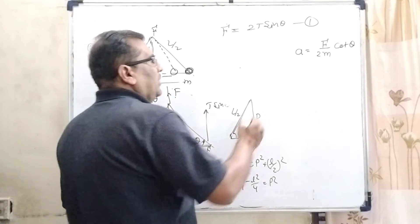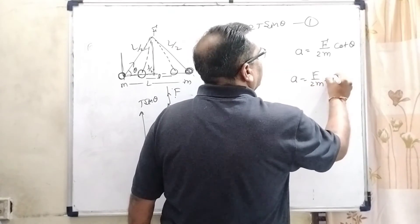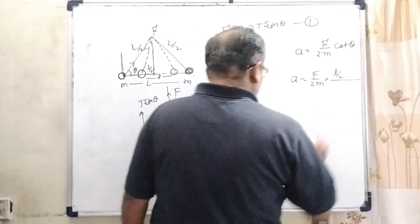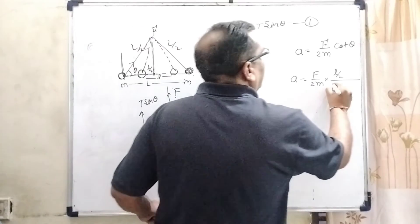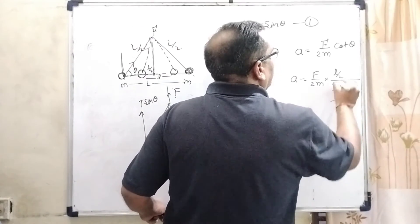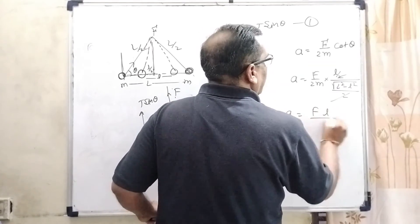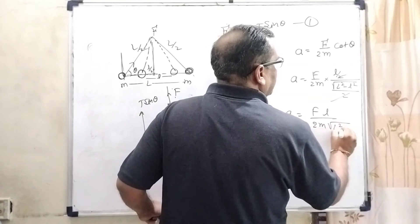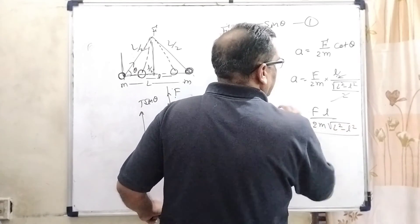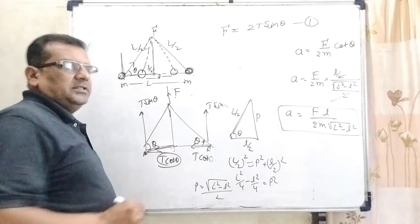Now what is the value of cot theta? Cot theta equals base upon perpendicular. What is base? l by 2. And what is perpendicular? L squared minus small l squared upon 2. Here 2, 2 cancel out. Then acceleration equals F small l by 2 M root capital L squared minus l squared. So here is the acceleration of this point mass.